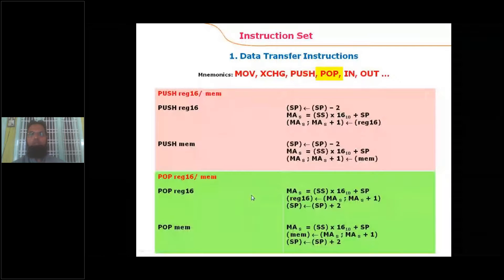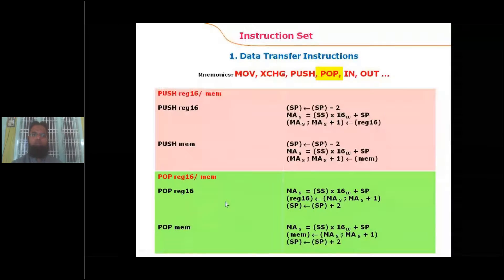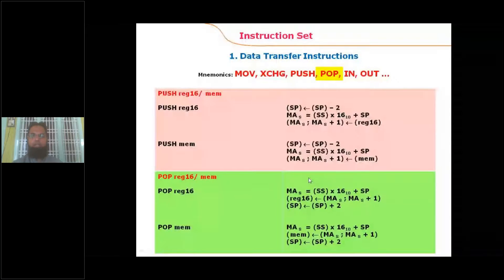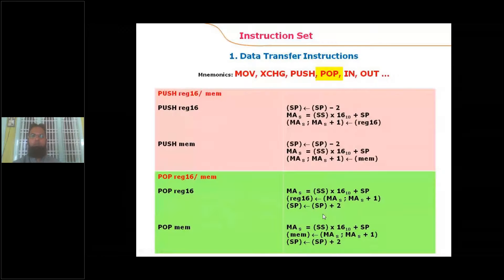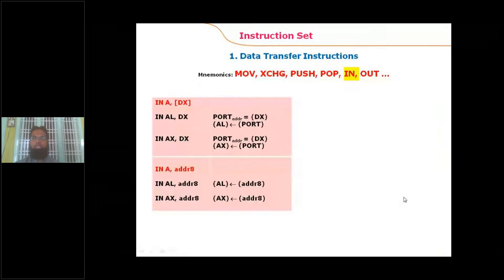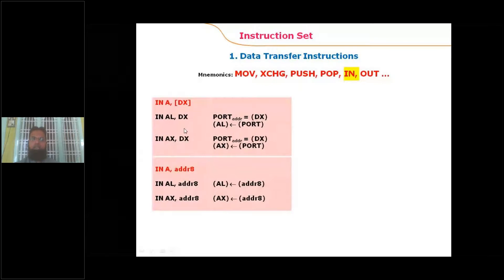XCHG (Exchange) exchanges the content of two registers or a register and a memory location. PUSH transfers a word onto the stack — the stack pointer is decremented by two first, then the word is stored. POP transfers a word from the stack into a register or memory — the word is read first, then the stack pointer is incremented by two. IN and OUT instructions are used to access input and output devices respectively; they use AL as the accumulator and DX as the port address register.